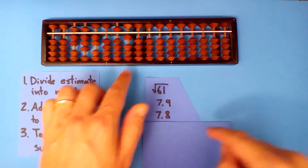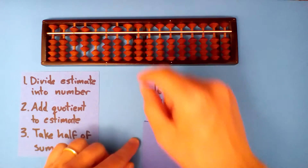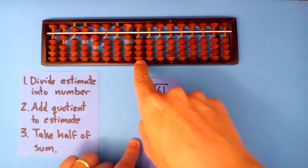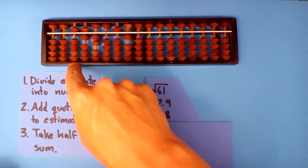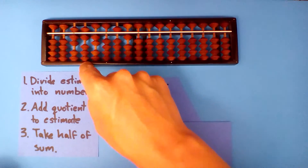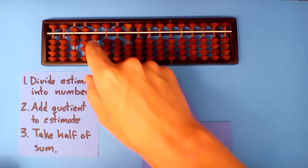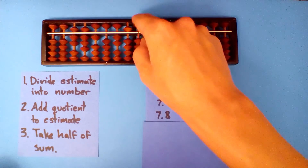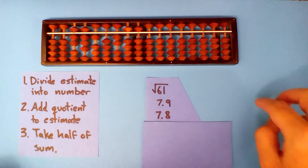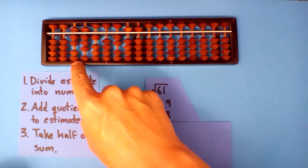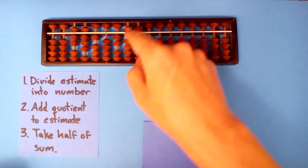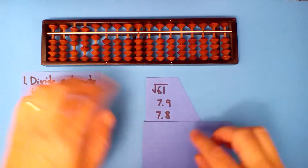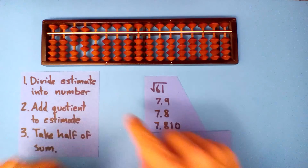Let's add our quotient to our estimate: 7.8 and 7.8. Take half of this. Half of 1 is 0, half of 15 is 7, half of 16 is 8, half of 2 is 1, half of 5 is 2, half of 11 is 5, half of 10 is 5. This is our second try, so I only need 4 decimals: 7.81. I'm going to round this down. Now we have an even better estimate, but we're going to improve that as well.